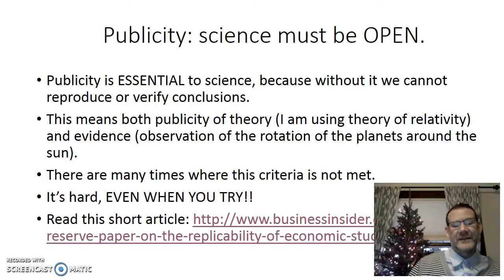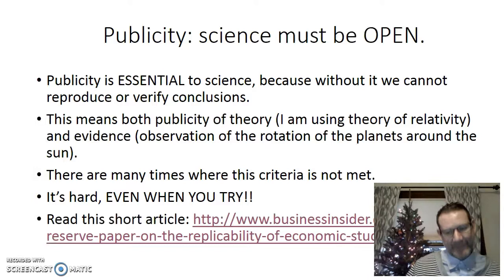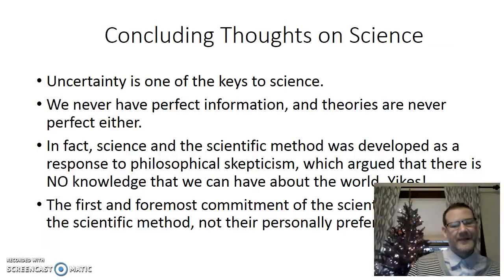Publicity is incredibly important in science. Without it, people frequently won't trust you. When you're doing research, you have to share your methods, your theories, and your observations in your writing. If someone asks for your data, you give it to them. You're supposed to give over your data so that they can try to replicate your research. If people can't replicate it, maybe you went wrong. Finally, uncertainty is one of the keys to science — science actually began as a response to philosophical skepticism that argued there was no knowledge we could have about the world.